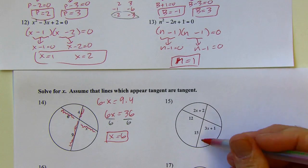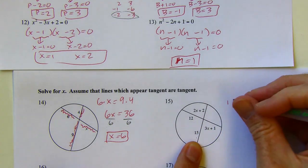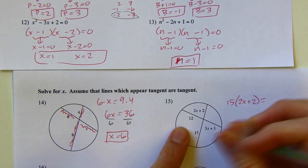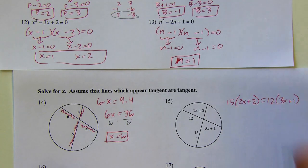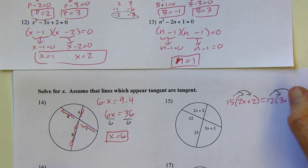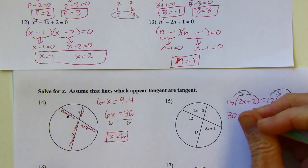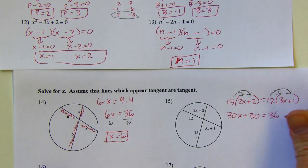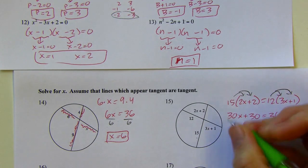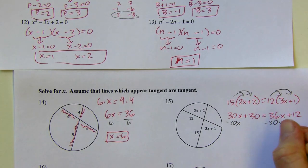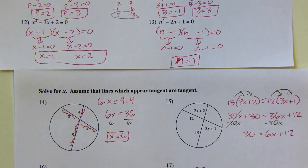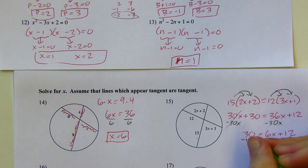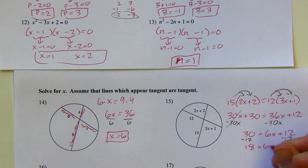Same kind of deal here — I've got some more complicated expressions. So 15 times the quantity 2X plus 2 is going to equal 12 times the quantity 3X plus 1. Now I want to start simplifying by distributing on both sides to get rid of the parentheses. Then combining like terms — I'll subtract 30X and subtract 12, divide by 6, and X comes out to 3.